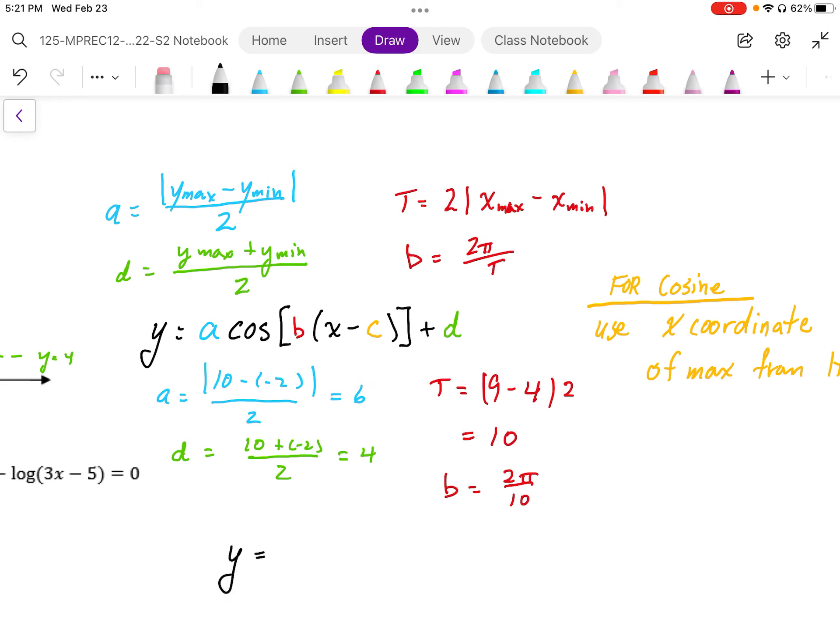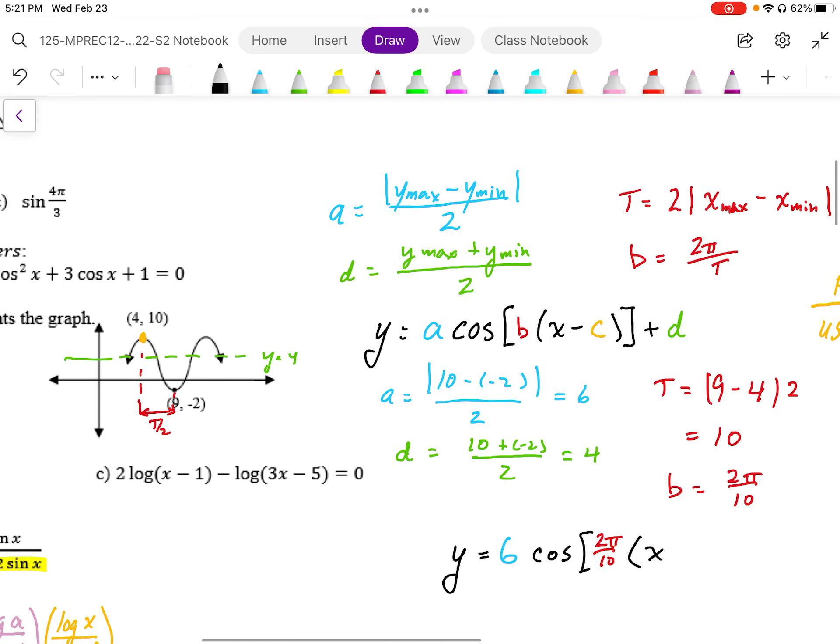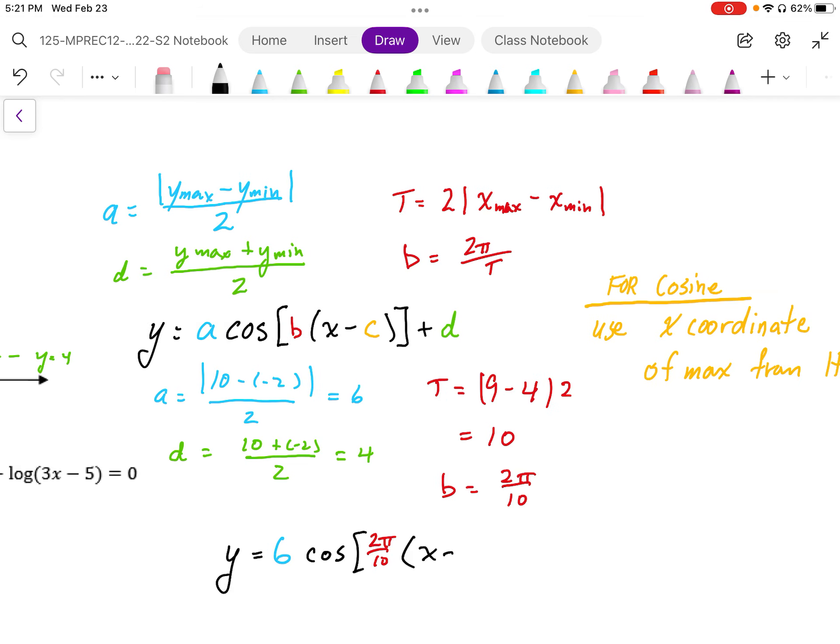So, the equation becomes 6 times cosine. Okay, the B value is 2 pi over 10. The horizontal shift is going to be the horizontal position of the max. So, it's going to be 4. So, it's going to be minus 4. And then, getting the vertical shift, it's going to be 4 up from the middle. So, plus 4. So, there is my cosine equation.